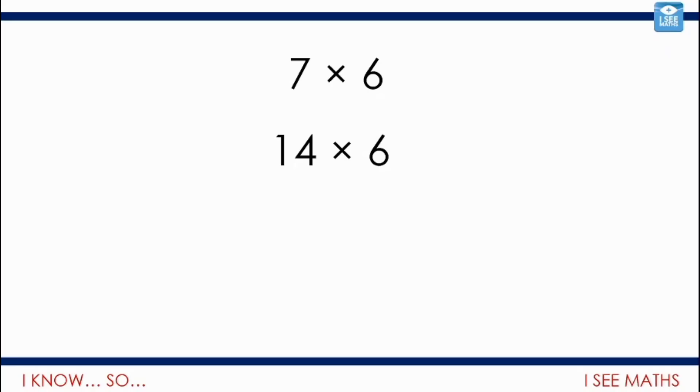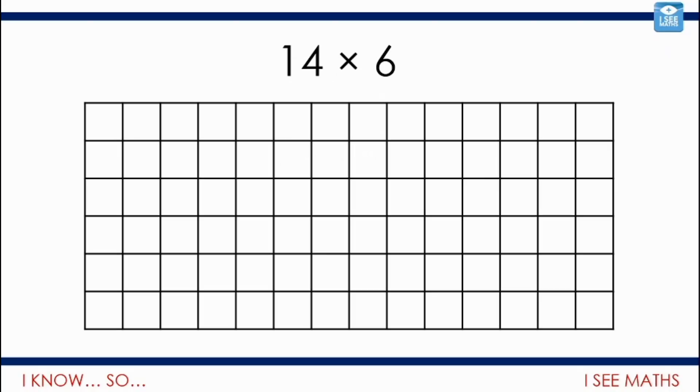But we want lots of different ways to work that out. So, for example, I might just think, well, it's going to be double 7, 6's. 7, 6's is 42. So, 14, 6's must be 84. So, let's have a look at the ways we could see that.